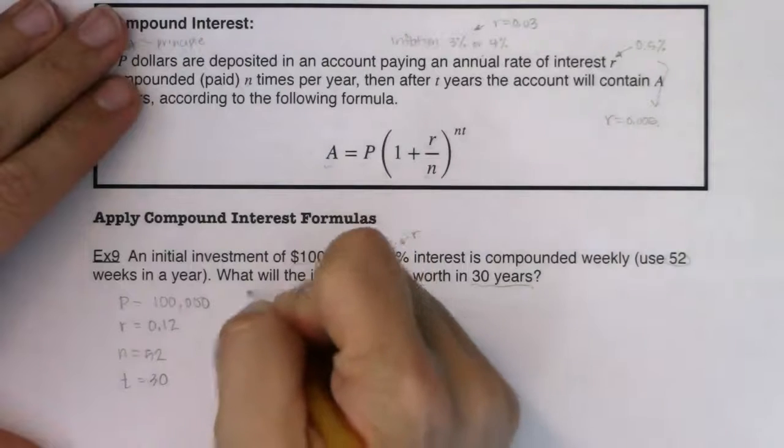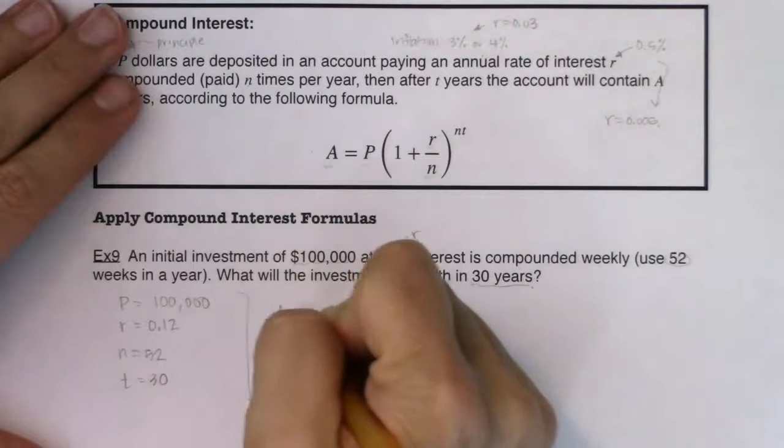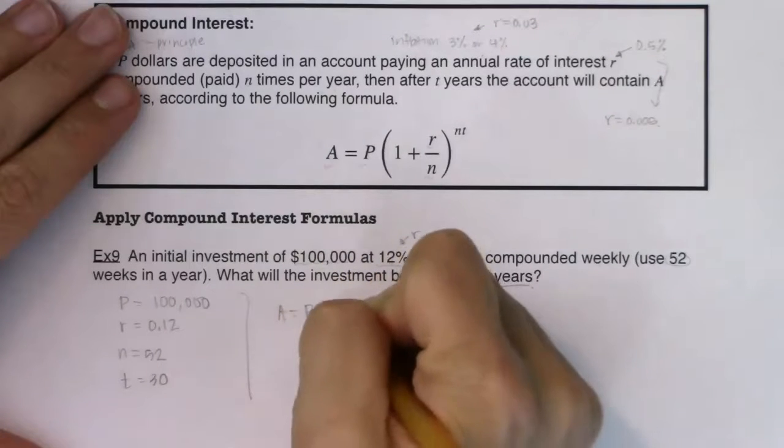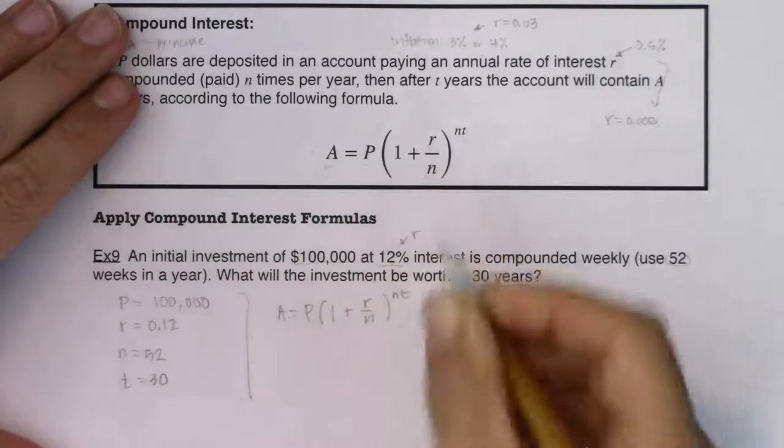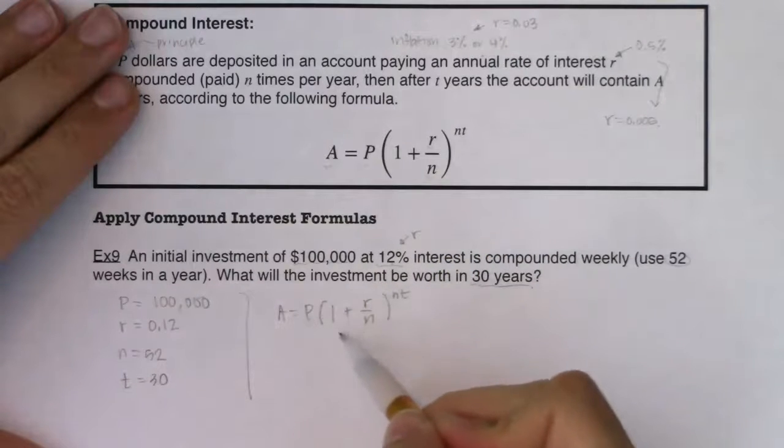Well it's just a matter of plugging in. So I know A will be equal to my principal and then we've got 1 plus R over N to the NT. Now I want you to take note of the exponential growth in here. Do you see my equilibrium?